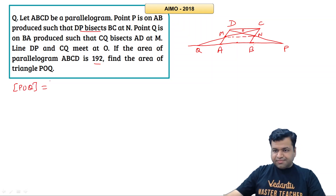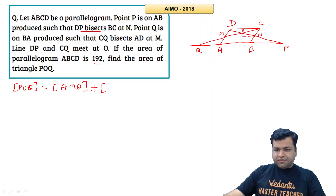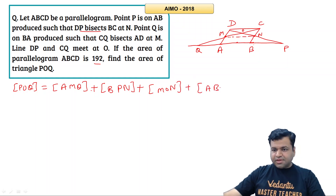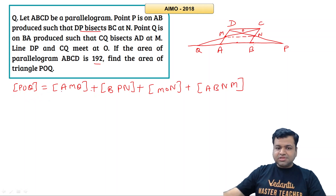I'll break the area of triangle POQ into four parts: area of triangle AMQ, plus area of triangle BPN, plus area of triangle MON, plus area of parallelogram ABNM.